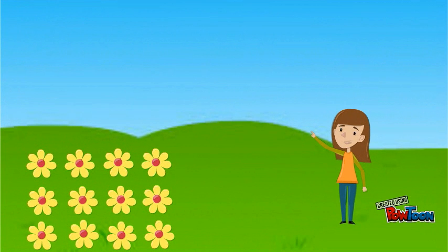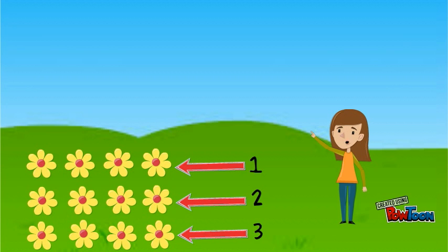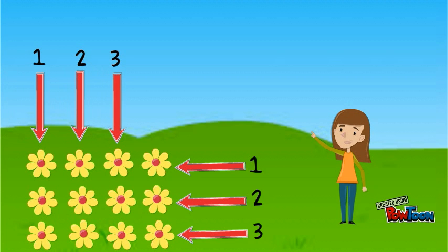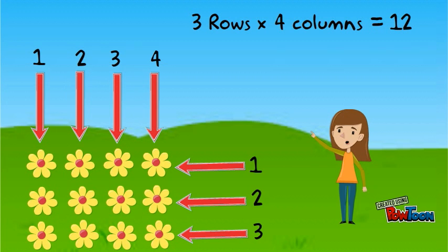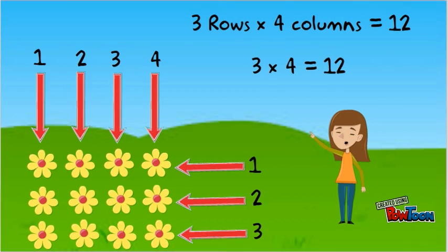Let's look at the array of flowers in the school garden. There are one, two, three rows of flowers in the garden. There are one, two, three, four columns of flowers in the garden. Three rows times four columns equals twelve. Three times four equals twelve.